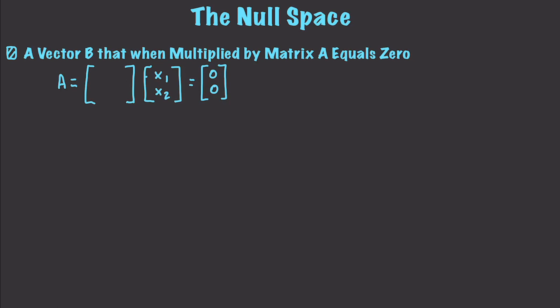This time I'm going to have a matrix 1, 2, 3, and 4. In the final example I'll actually take the result that I get and multiply it back toward the original matrix to prove that it is the null space. Now I want to solve for the values of x1 and x2 that are going to make this true, just like before. So I'm going to have 1, 3, 2, and 4.